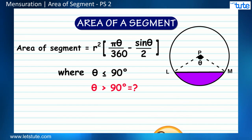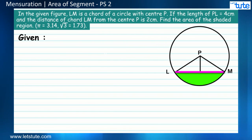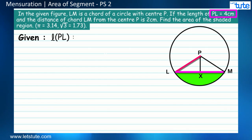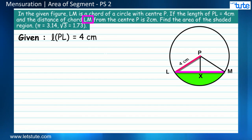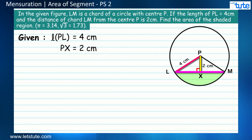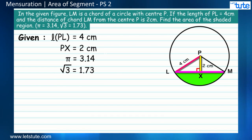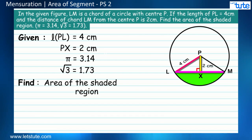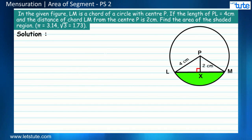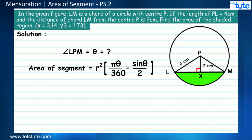Let's take a similar scenario and see how to go about it. In the given figure, LM is a chord of a circle with center P. If the length of PL is equal to 4 centimeters and the distance of chord LM from the center P is 2 centimeters, find the area of the shaded region. The values of pi and root 3 have been given to us. Before we proceed to the actual solution, let's figure out the way of finding the area of the segment, since we are not sure about the angle and cannot directly use the formula.